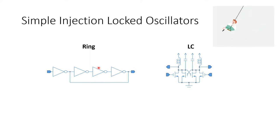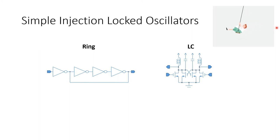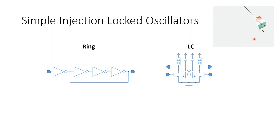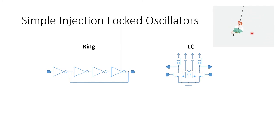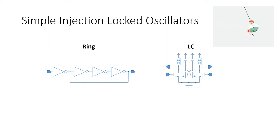An analogy I like to use here is with a pendulum or a person on a swing — this is an oscillator. If you're pushing a person on a swing, that's injection-locking the oscillator. The simplest case is that you push the person on the swing right at its resonant frequency. When you do so, very little effort is required — you just provide a light touch to overcome any losses, any friction in the system. The person will keep oscillating at the resonant frequency as determined by the length of the pendulum.